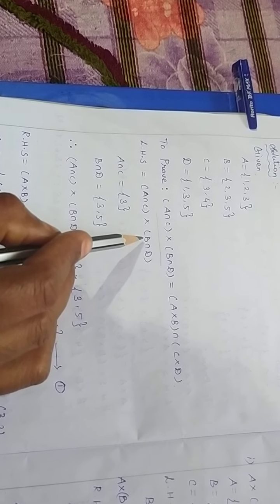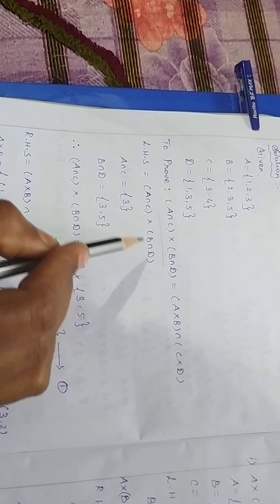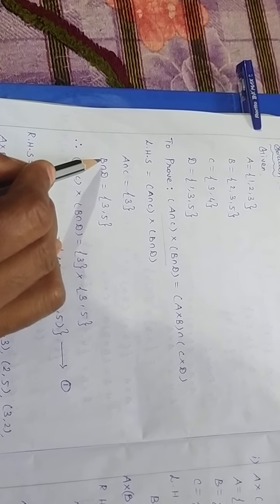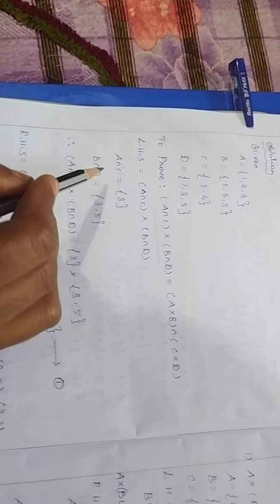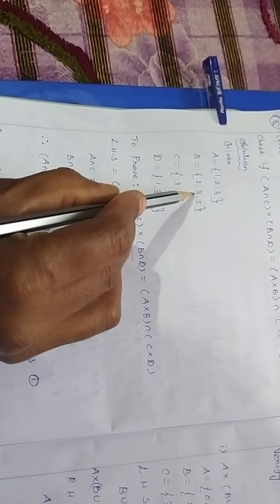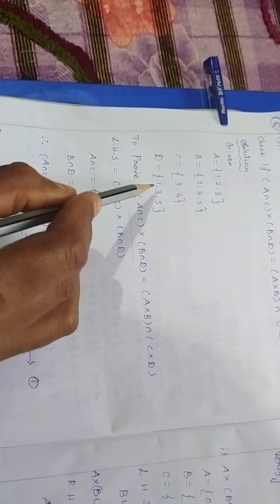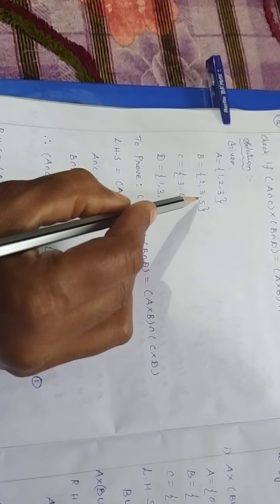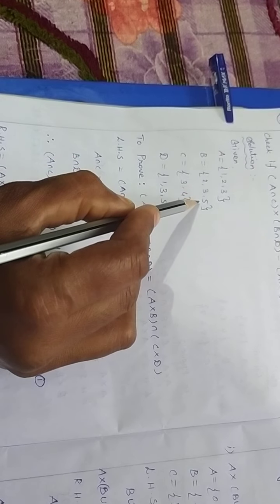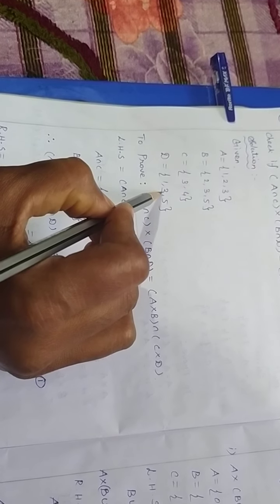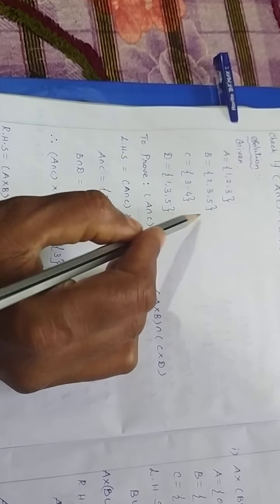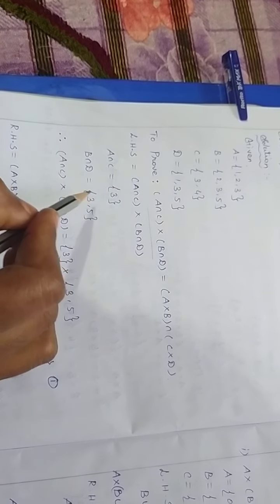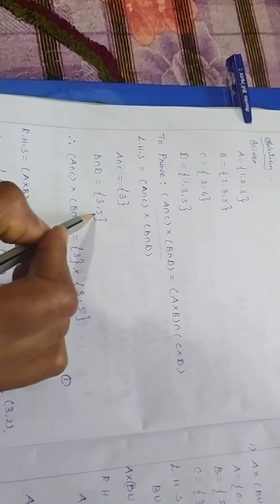Next, we want to find B ∩ D. Intersection means common elements in both sets B and D. B is {2, 3, 5} and D is {1, 3, 5}. The elements 3 and 5 are common in both sets B and D. So B ∩ D = {3, 5}.